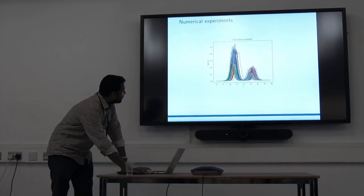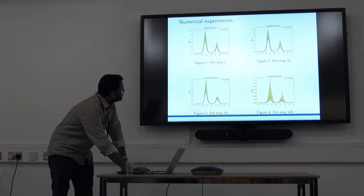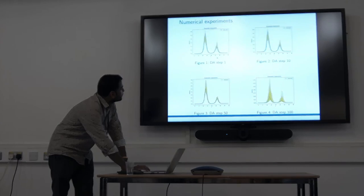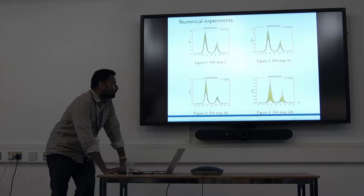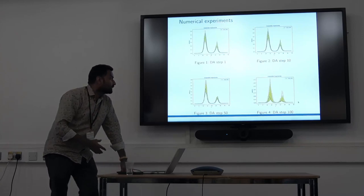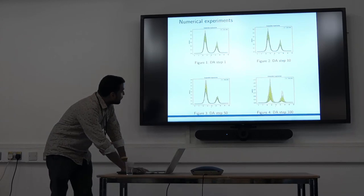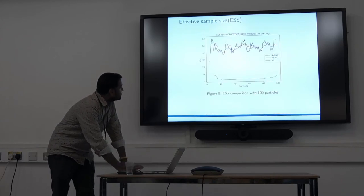This is how the initial ensemble looks. Everyone is different because of the noise. This is DA step one with the true solution and the yellow lines are all the particles. This is step 1, step 10, step 50, and 100. It looks well, and every DA step we're running five times our time discretization.